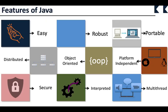Java is not strictly an interpreted language but rather a compiled language that uses a hybrid approach known as the Java Virtual Machine. Java source code is written in a plain text file with a .java extension. The Java compiler (javac) compiles the source code into bytecode, which is a platform-independent representation of the program. That bytecode is saved in a .class file, which is then interpreted and executed.